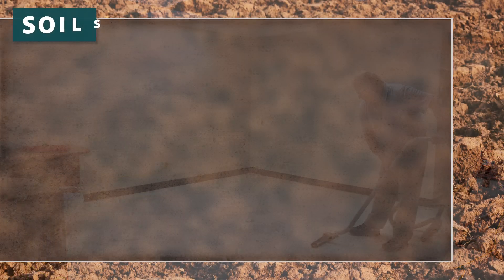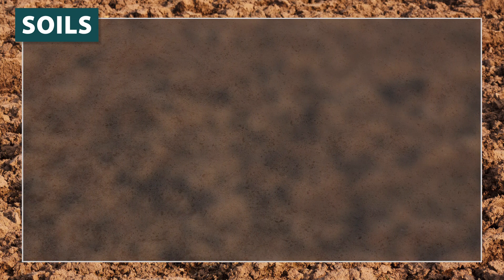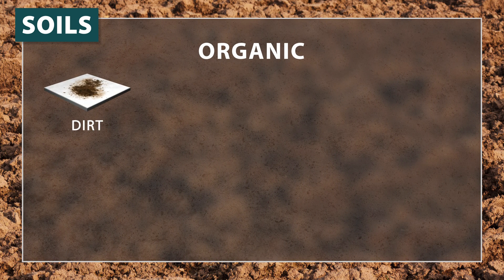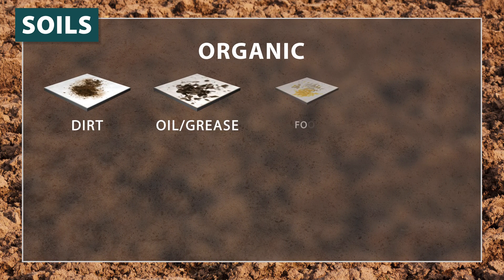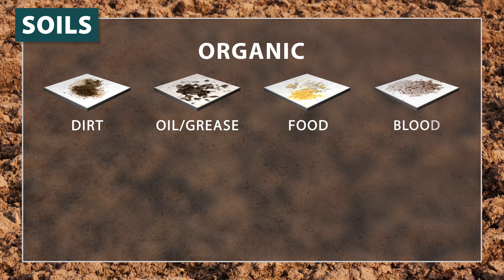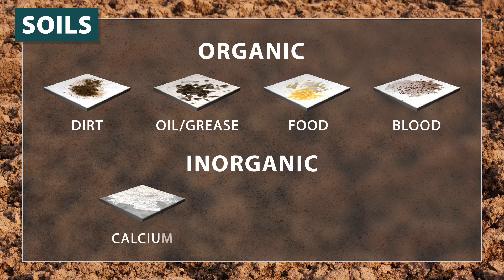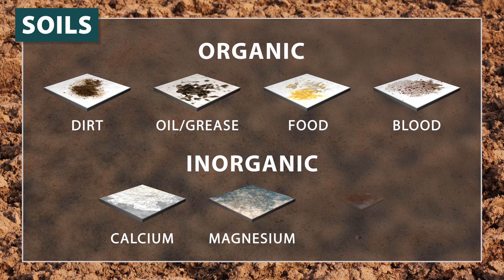Soils are categorized into two types. Organic soil includes dirt, oil, grease, food, and blood. Inorganic soil includes calcium, magnesium, and rust.